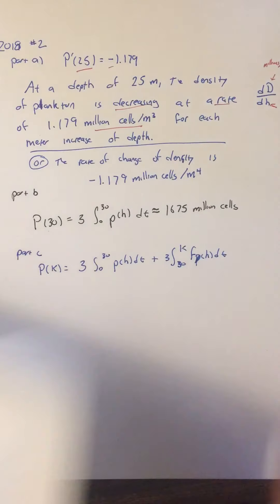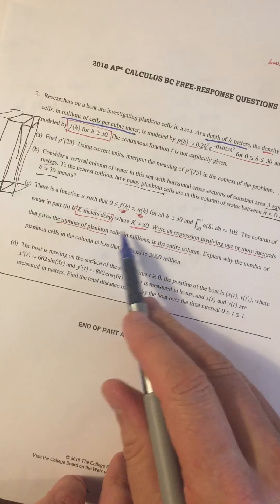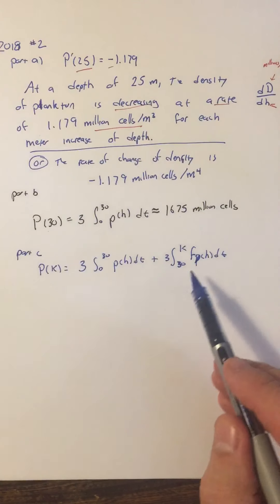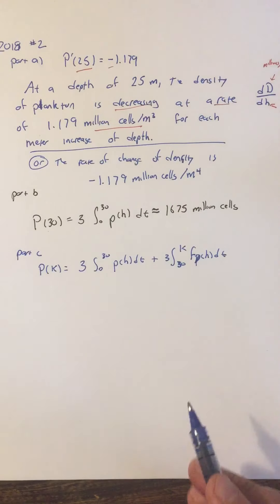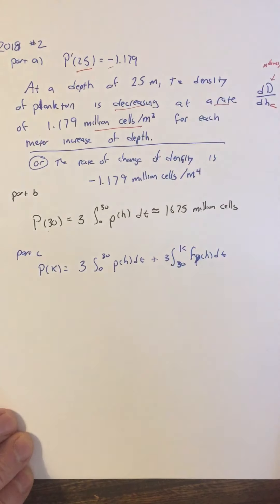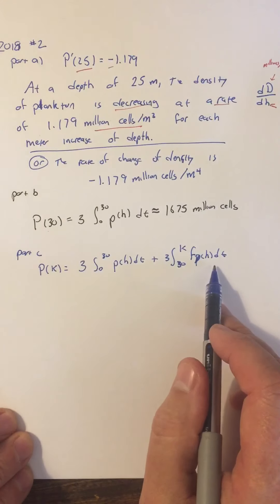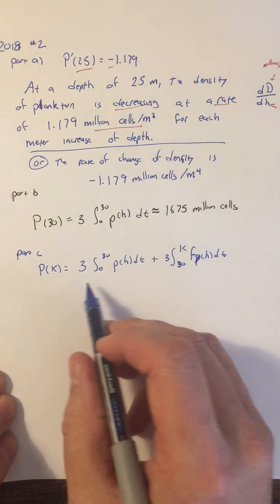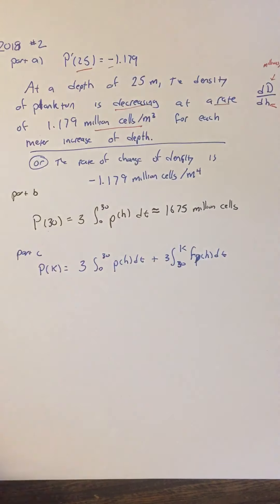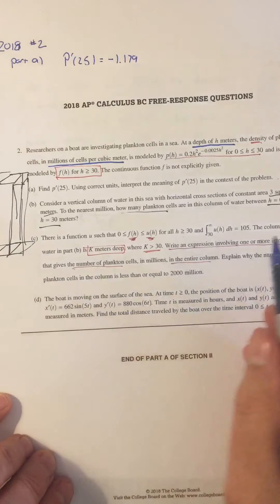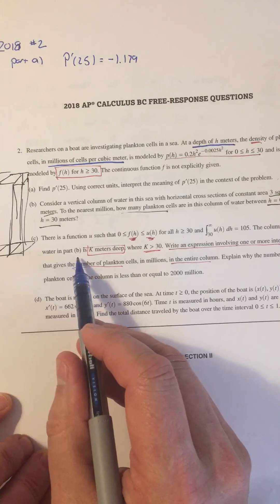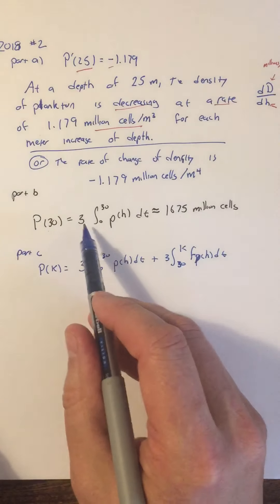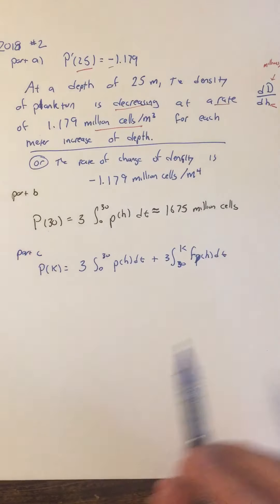Actually, that second integral should use f of h, not p of h — because for h greater than or equal to 30, we use the function f. So the expression involves one or more integrals giving the number of plankton at depth k. Note that both integrals carry the factor of 3 because the column has a 3-square-meter cross-sectional area from part B.